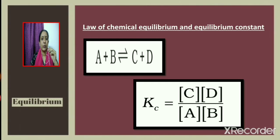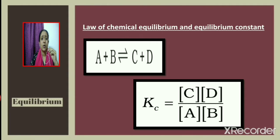Law of chemical equilibrium and equilibrium constant: consider the reversible reaction A + B ⇌ C + D. The equilibrium constant Kc can be written as Kc = [C][D] / [A][B], where square brackets denote concentration.